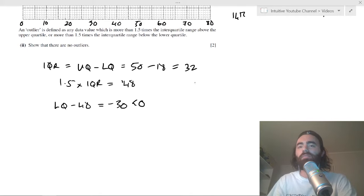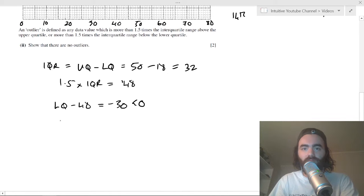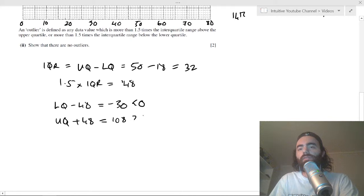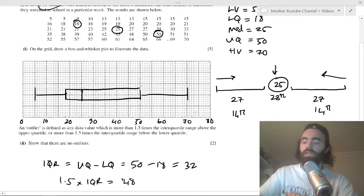The upper quartile plus 48 is 50 plus 48, which is 108. The highest value we have is 70, which is less than 108, so there's going to be no data points which are 108 and greater. So we can say there's no outliers.